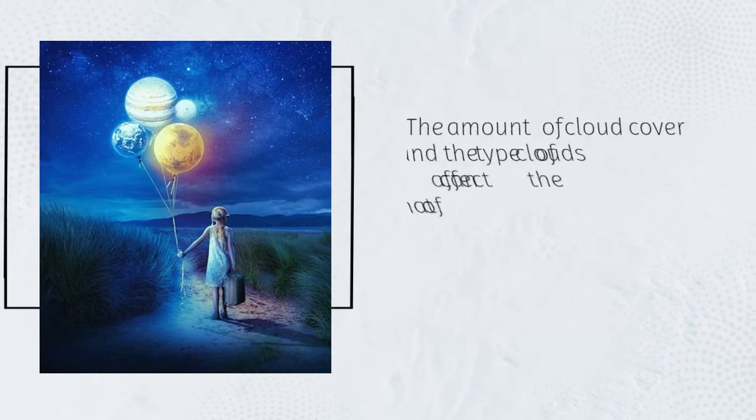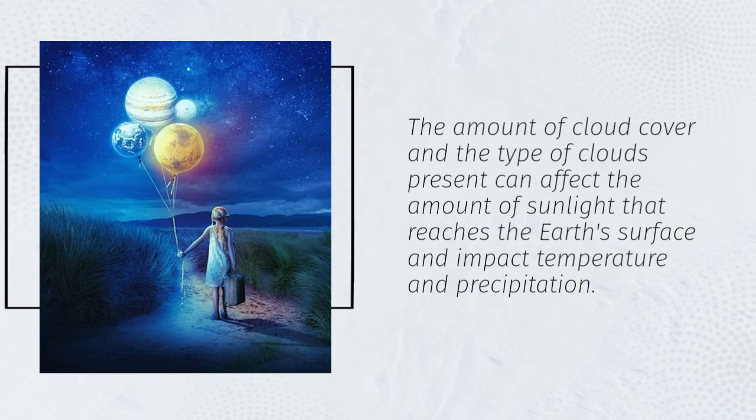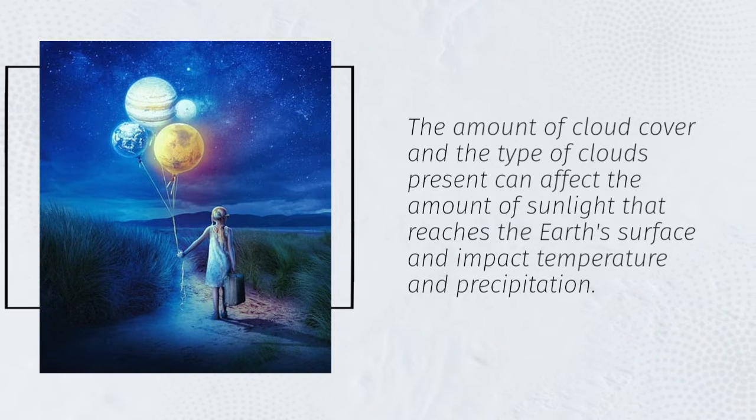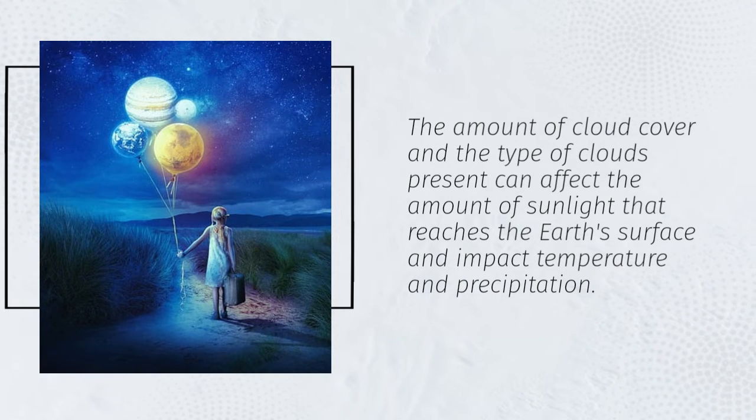The amount of cloud cover and the type of clouds present can affect the amount of sunlight that reaches the earth's surface and impact temperature and precipitation.